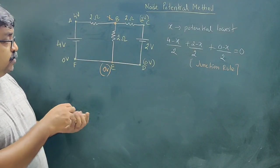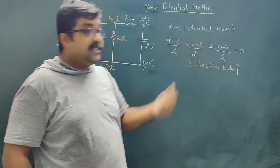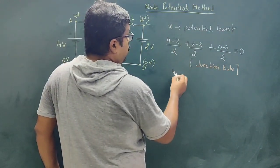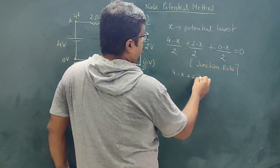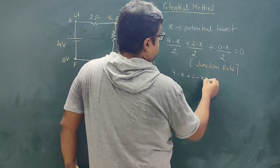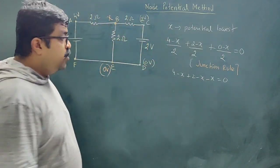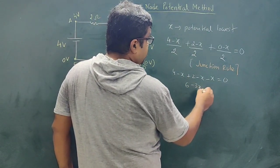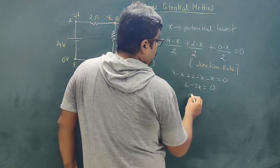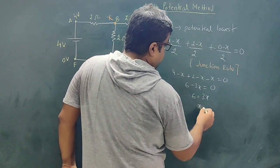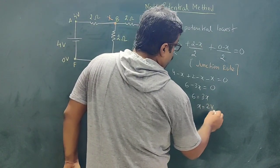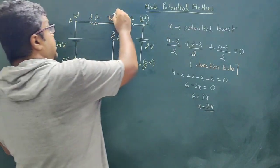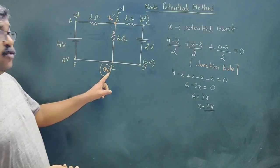Here the only unknown is X, so it can easily be determined. We have (4 minus X) plus (2 minus X) plus (0 minus X) equals 0, which gives 4 plus 2 minus 3X equals 0, so 6 equals 3X, therefore X equals 2 volt. So this node is at 2 volt and the bottom is at 0 volt.